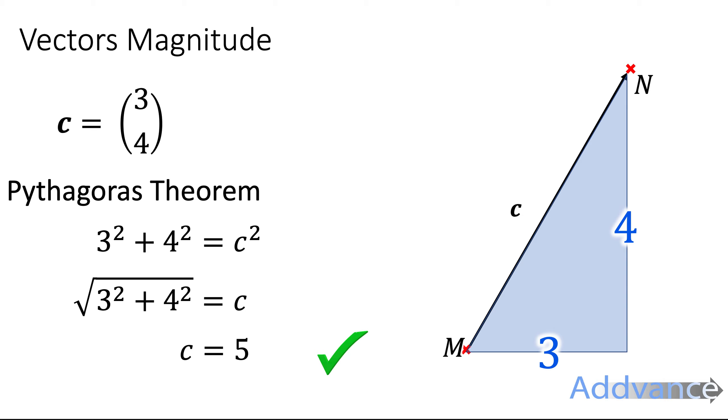Okay sometimes you might get a decimal that's okay, in fact quite often you would get a decimal with these. This is just a nice example where you get a whole number. So now you also know how to work out the size of a vector.